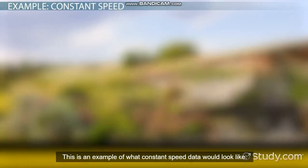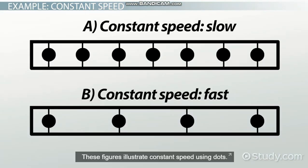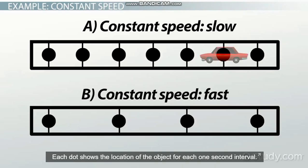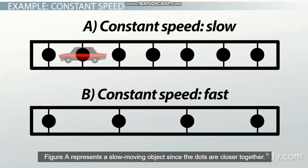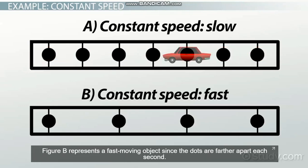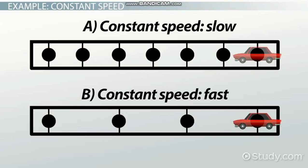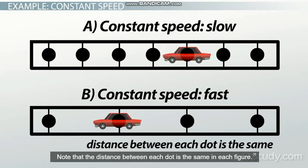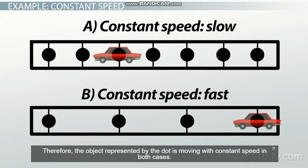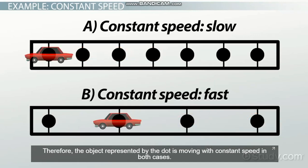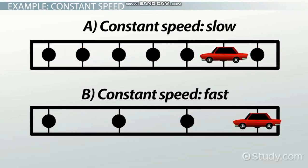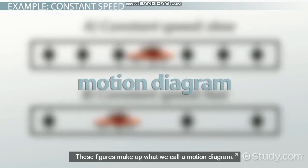These figures illustrate constant speed using dots. Each dot shows the location of the object for each one-second interval. Figure A represents a slow-moving object since the dots are closer together. Figure B represents a fast-moving object since the dots are farther apart each second. Note that the distance between each dot is the same in each figure; therefore, the object is moving with constant speed in both cases. These figures make up what we call a motion diagram.